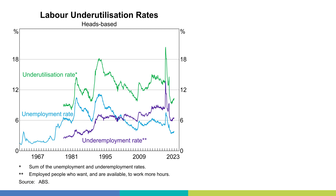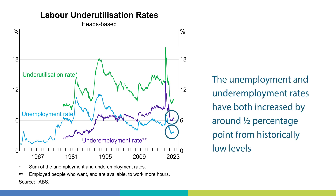I want to turn to the labour market now, which is another important economic indicator. Australia's labour market remains tight but conditions have continued to ease over recent months. The unemployment rate (the blue line) and the underemployment rate (the purple line) have both increased by around half a percentage point since late 2022.